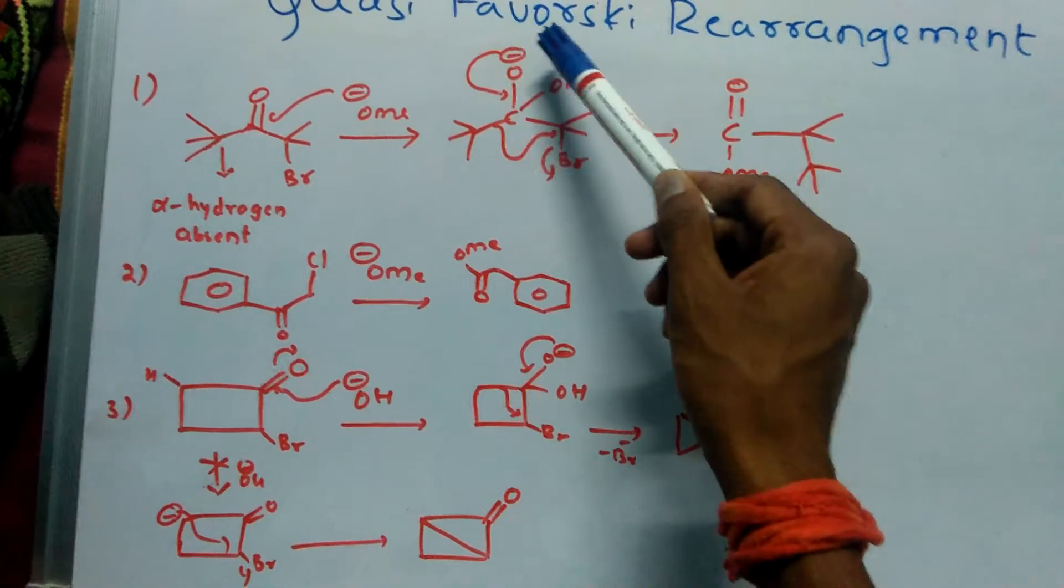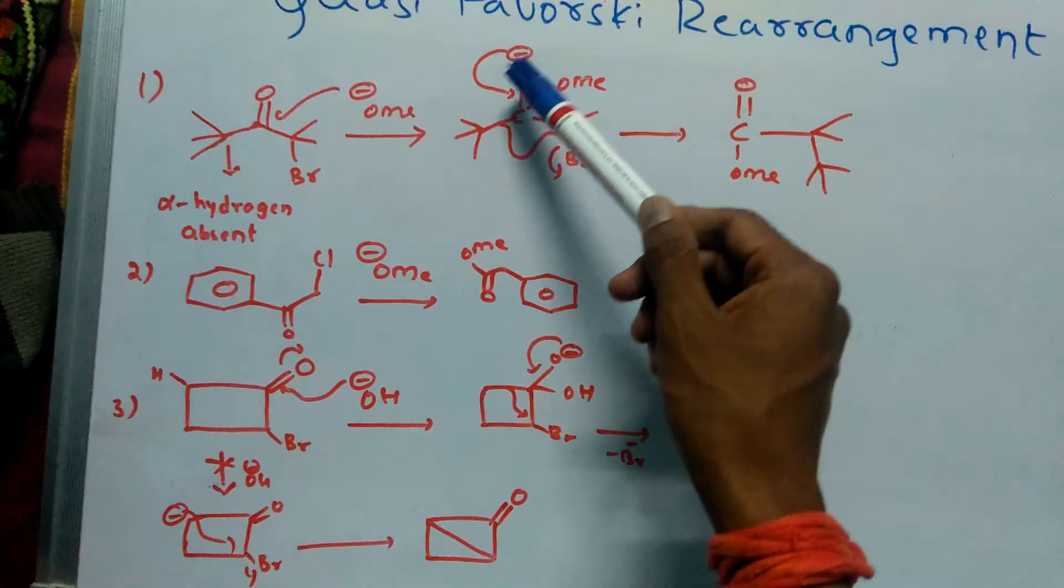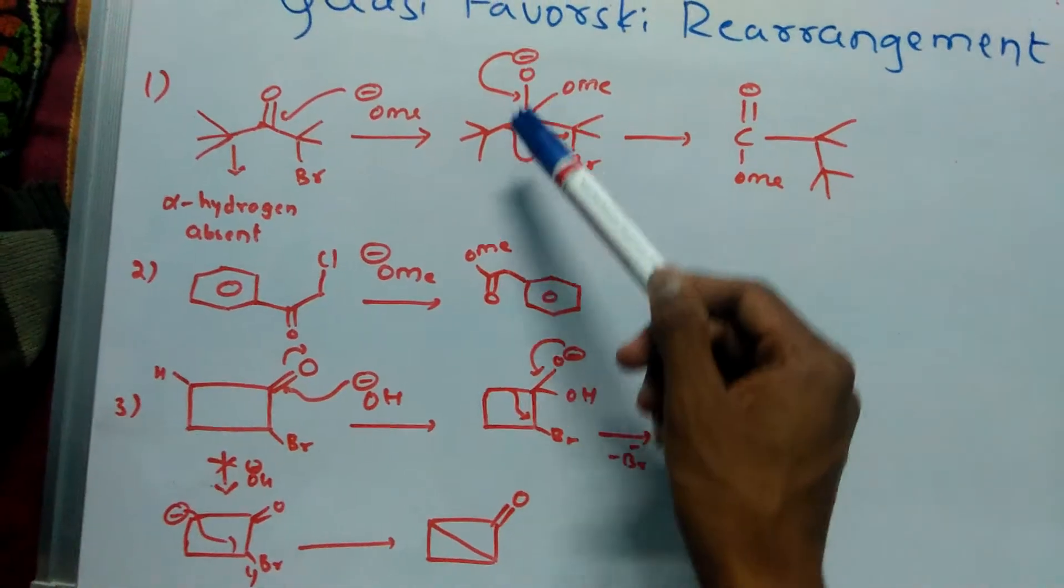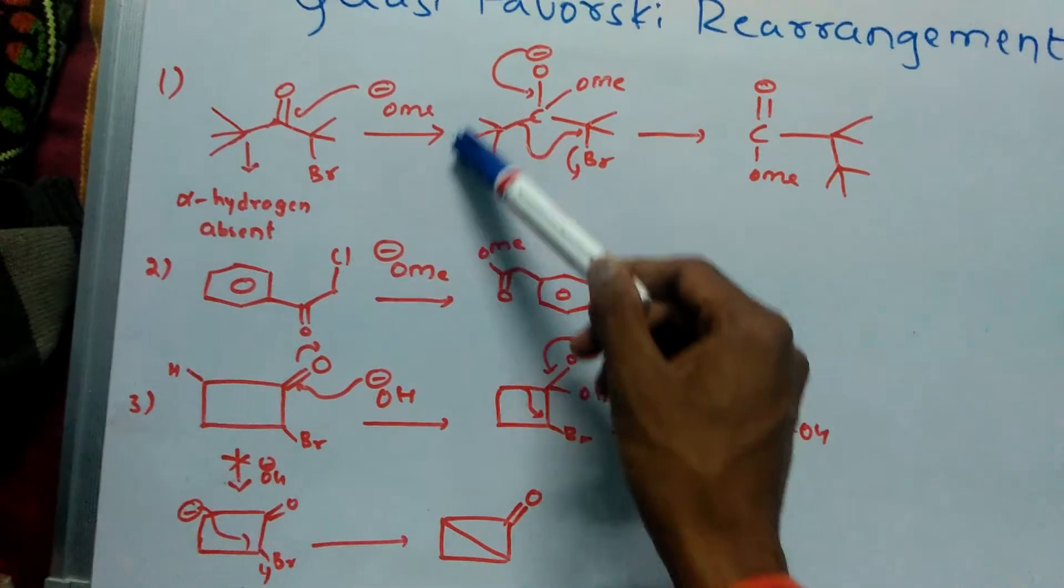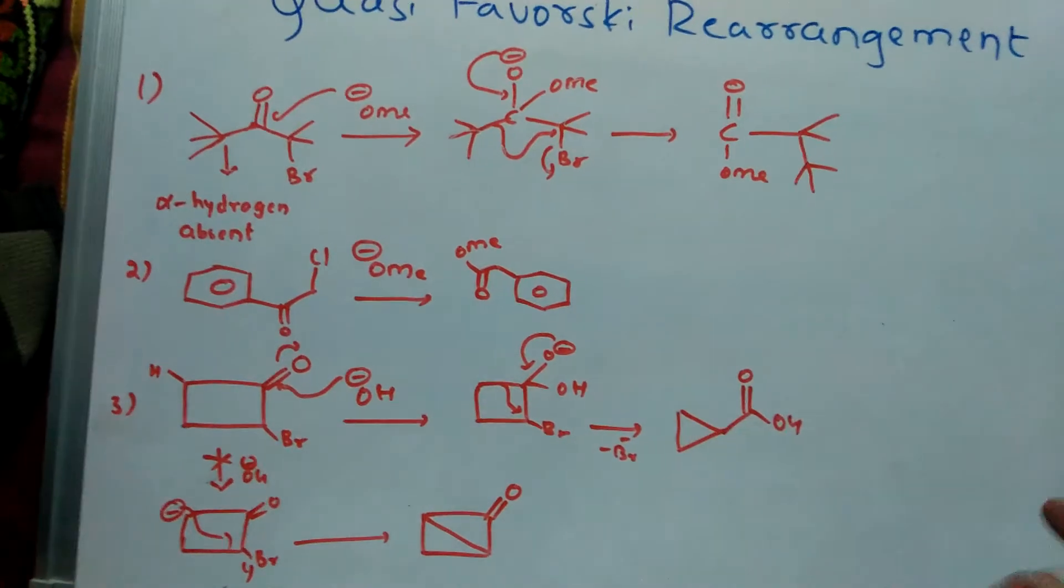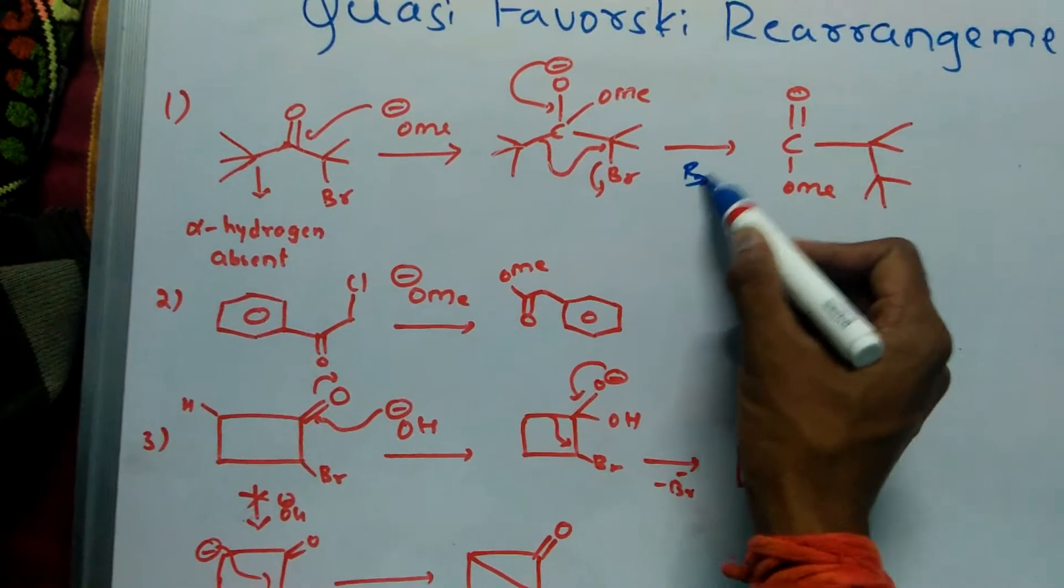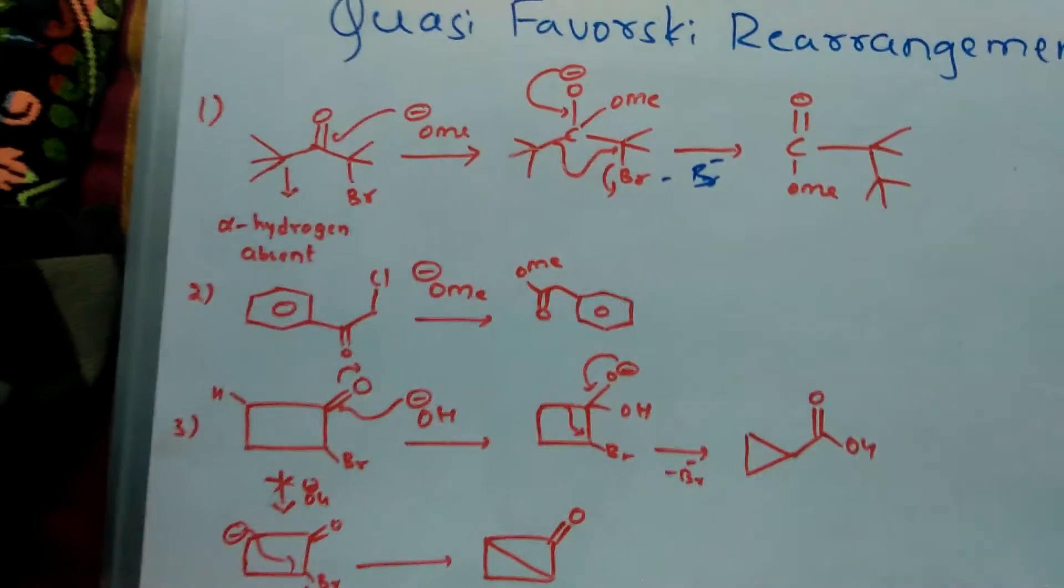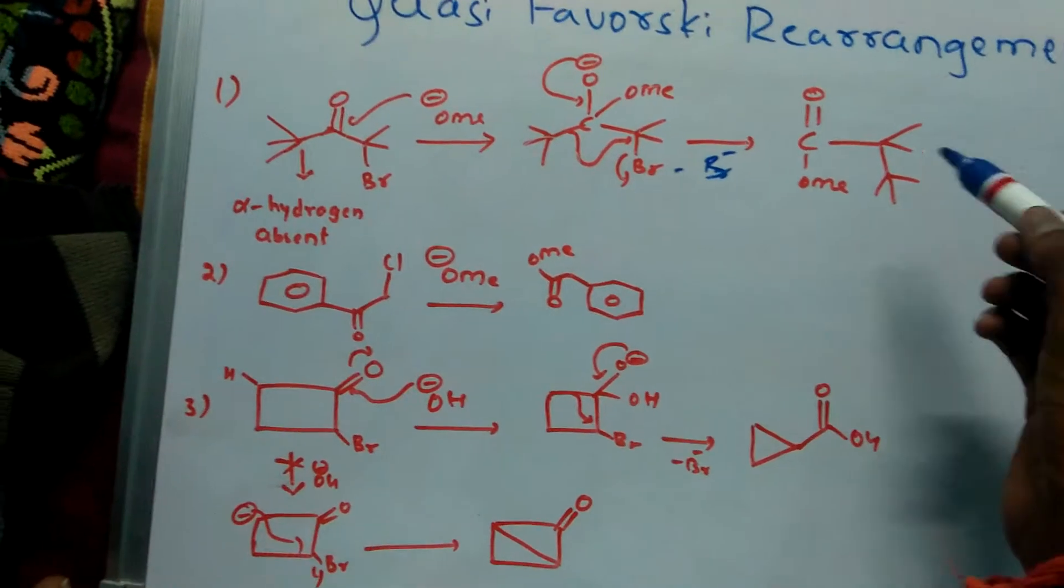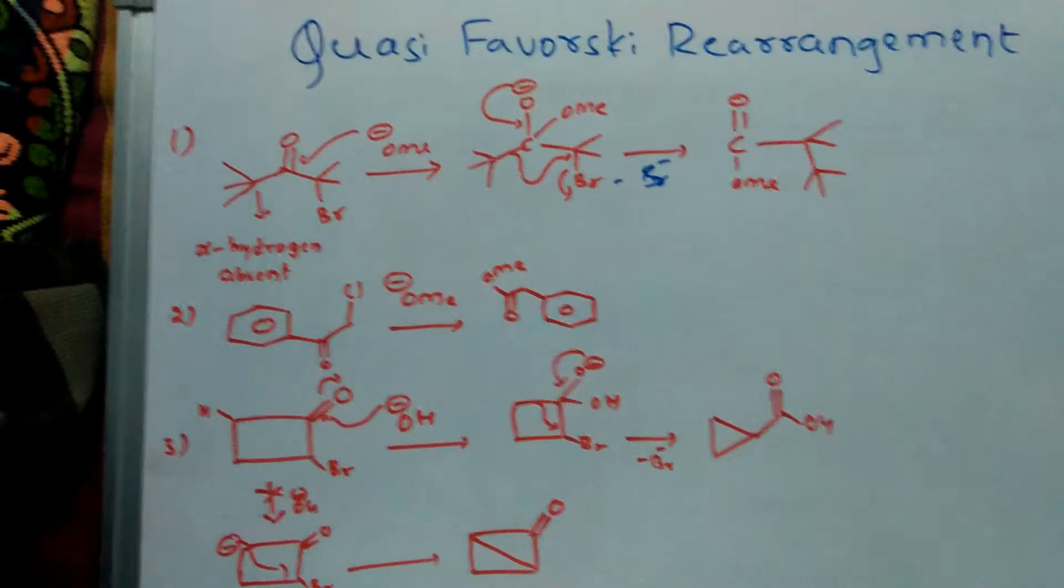O minus forms here. Electrons and oxygen come here, this group will migrate towards this, Br minus is liberated, and it forms this type of ester. Here, same example.